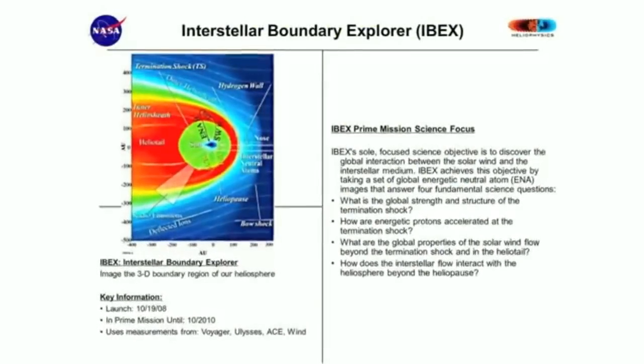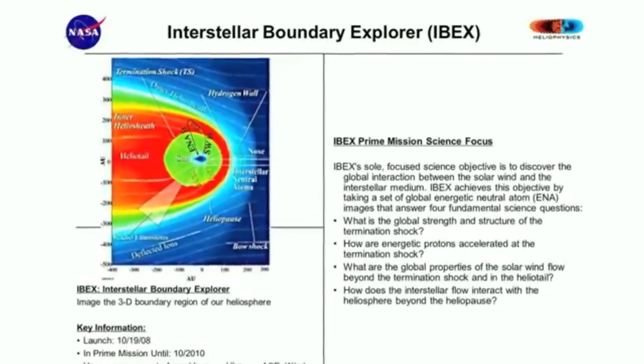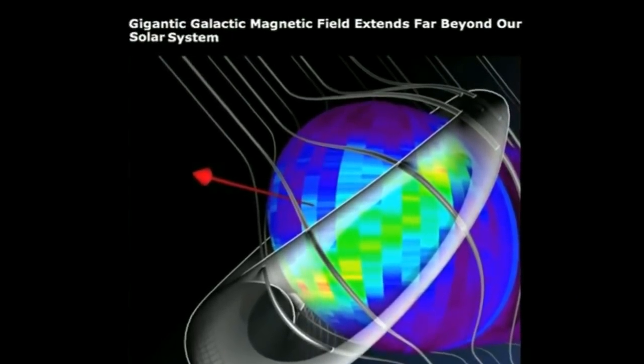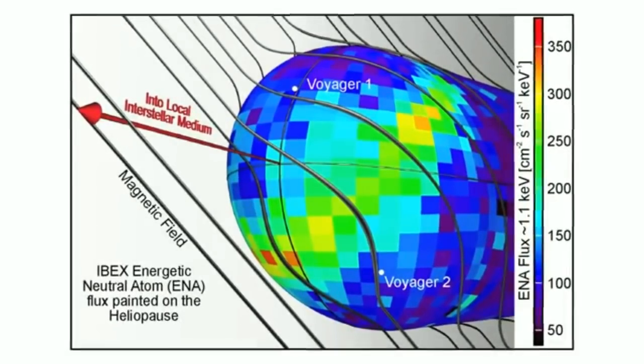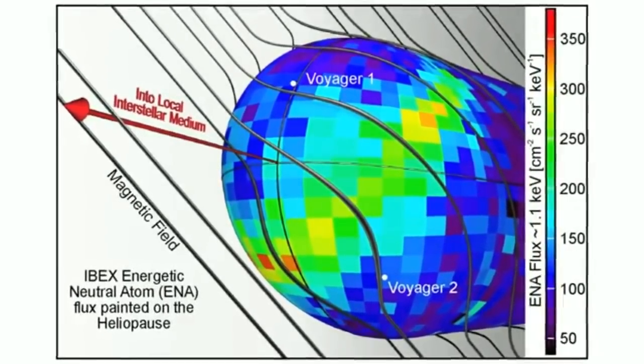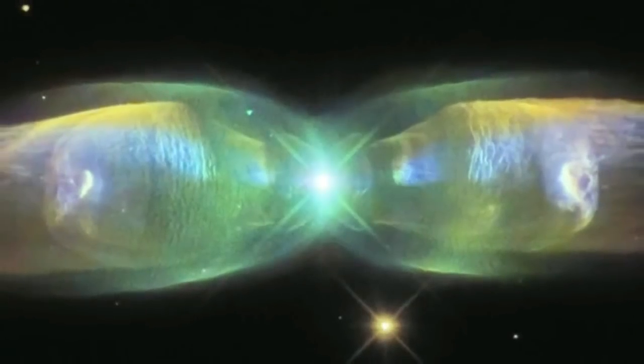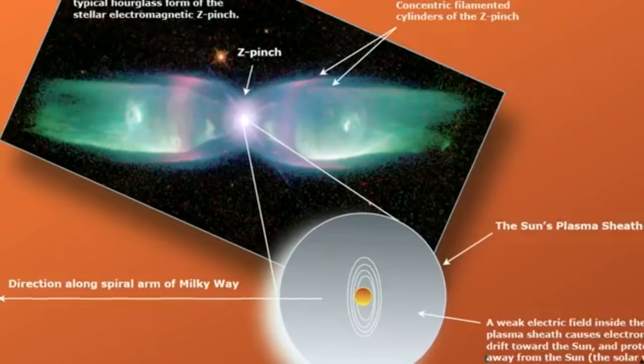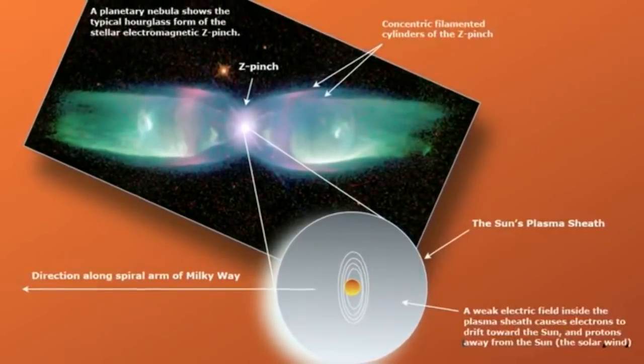NASA's IBEX and Voyager 1 missions have shattered all conventional ideas about the heliospheric boundary, the region separating our solar system from interstellar space. One of the great surprises is that the Sun's magnetic field is not deflected as it passes beyond the heliosphere into interstellar space as the standard model predicted. The magnetic field has not changed direction, which fits with this model because the magnetic field traces the direction of the electric current. If you look at the planetary nebula M2-9, you can see that the current from the star travels outwards beyond the heliosphere in the same plane as the solar wind, which is precisely what the Voyager spacecraft have found.